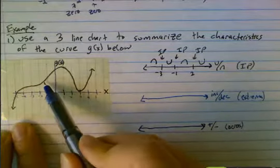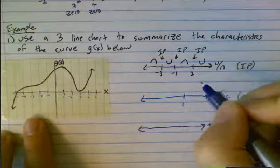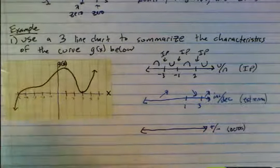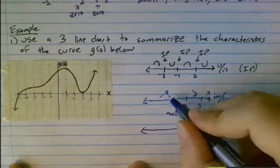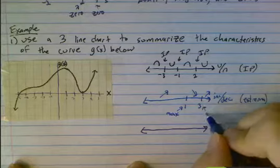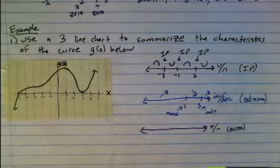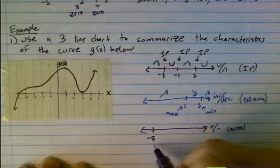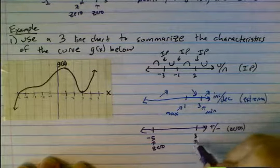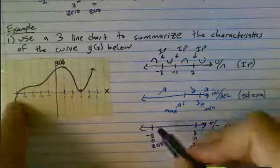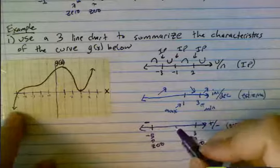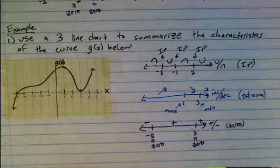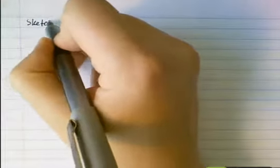For the extrema — that's increasing and decreasing — g of x is increasing up until we get to where x equals 1, decreasing until x equals 3, and then increasing again after that. That means we've got a maximum when g of x switches from increasing to decreasing, and a minimum when g of x switches from decreasing to increasing. For positive, negative and zeros: at x equals negative 5 there's a zero, at x equals 3 there's another zero. G of x is negative below the x-axis here, then positive above the x-axis in between and beyond.